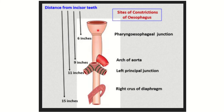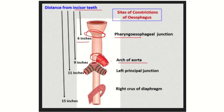The first constriction is at the pharyngoesophageal junction, at the entry point of the esophagus, which lies at the level of the cricoid cartilage — 15 cm from the incisor teeth. The second constriction is at the arch of the aorta. The third constriction is at the left principal bronchus, which is 11 cm from the incisor teeth.